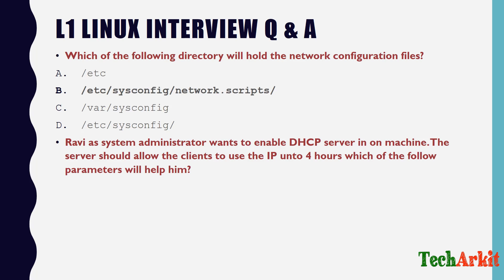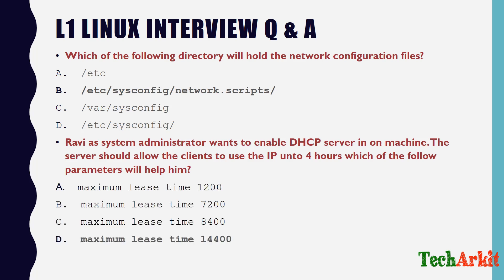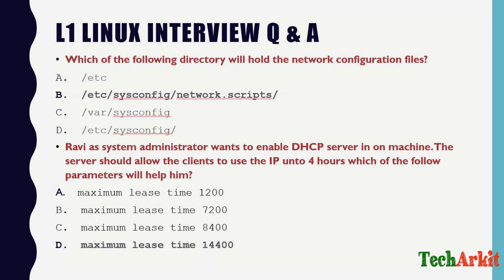The next question: Ravi as a sys administrator wants to enable a DHCP server so that clients can use an IP address for up to four hours. What parameter do you configure in Linux? The answer is the DHCP lease time — the maximum lease time should be configured as 14400 seconds, which equals four hours.